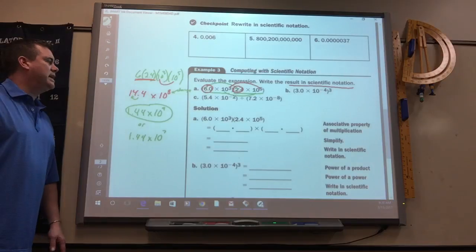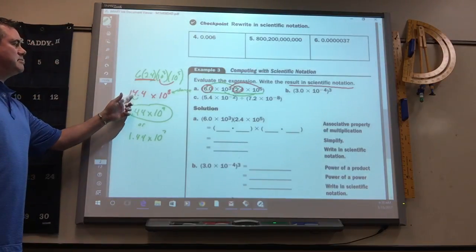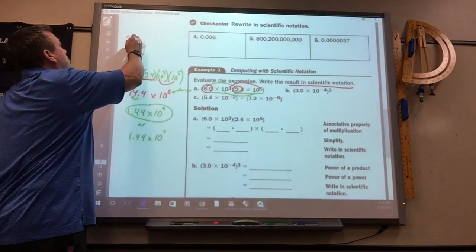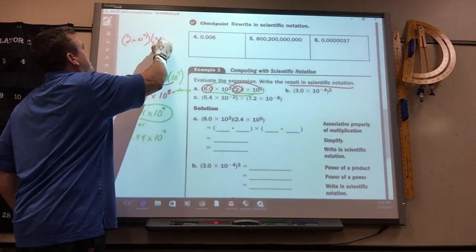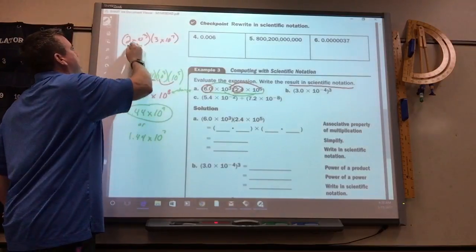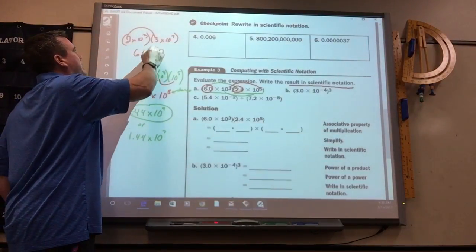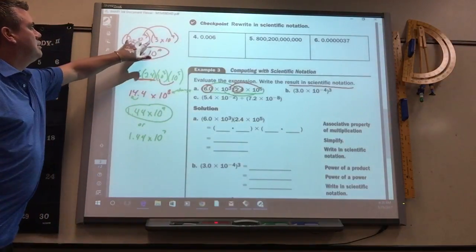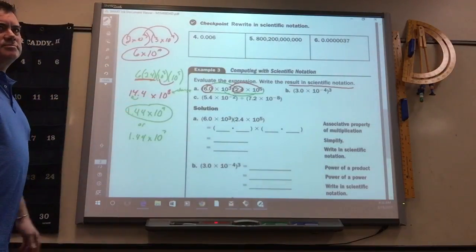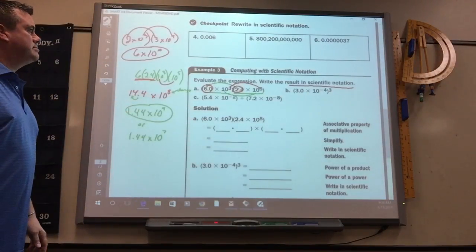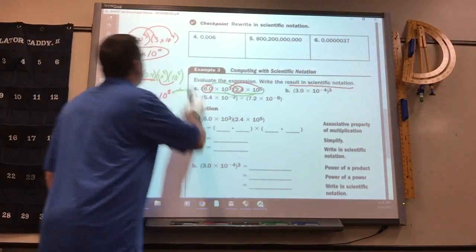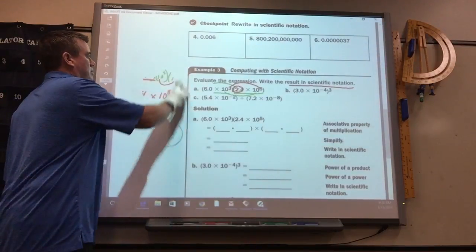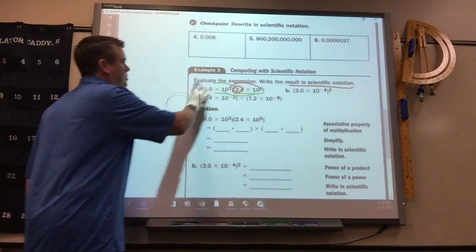That's usually the most confusing part. And it doesn't always end up like this. Sometimes the number does end up. Like, if you had 2 times 10 to the 3rd, times 3 times 10 to the 7th, that would be 6 times 10 to the 10th. And it's done. Because this made a number less than 10. So, sometimes that does happen.